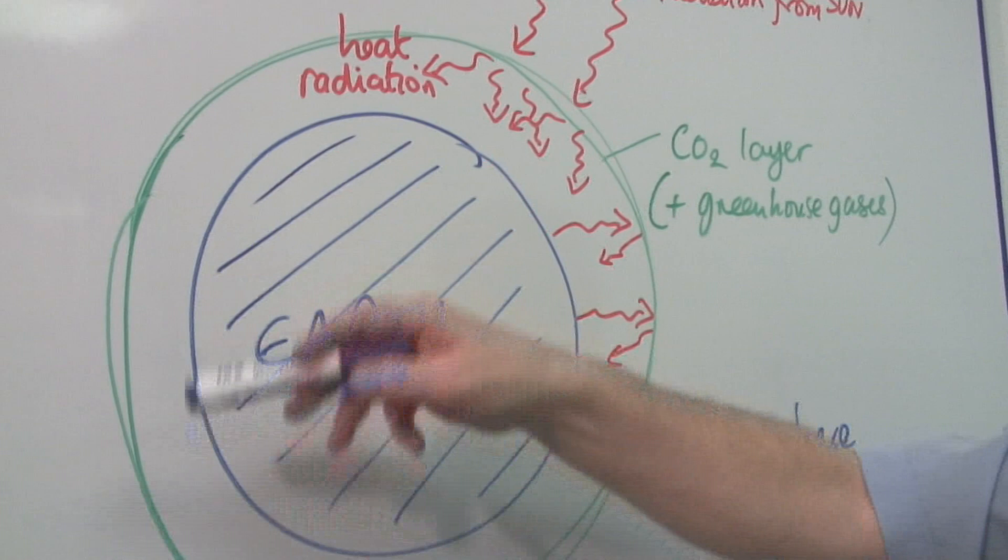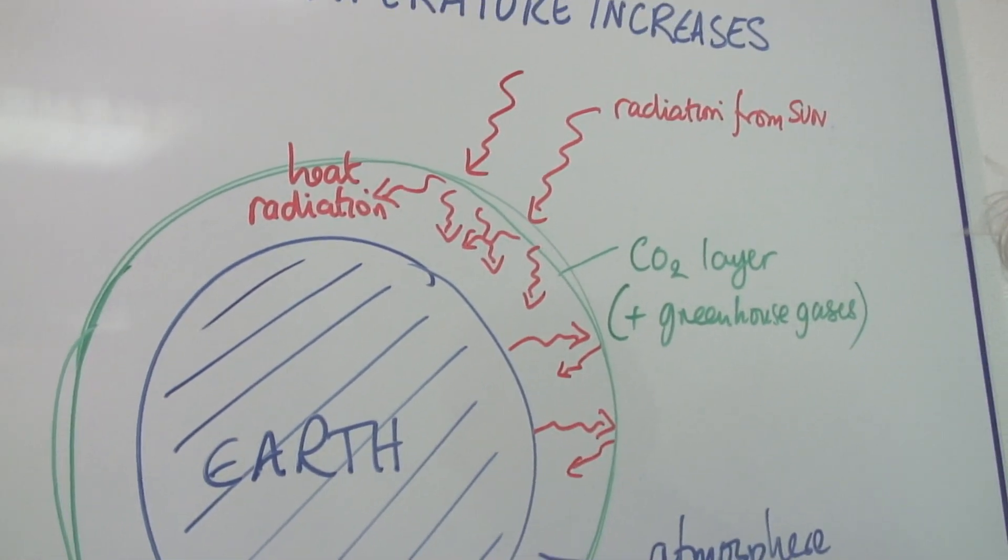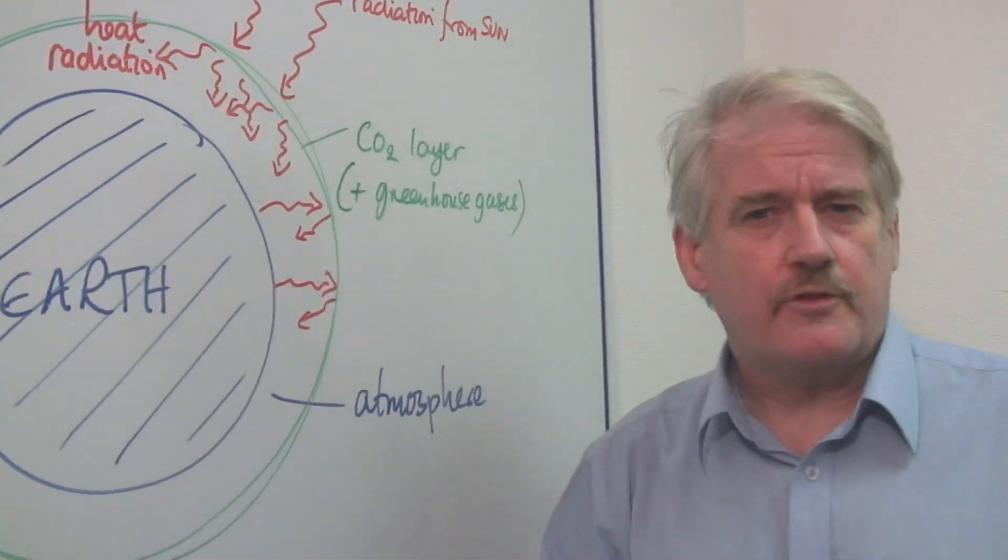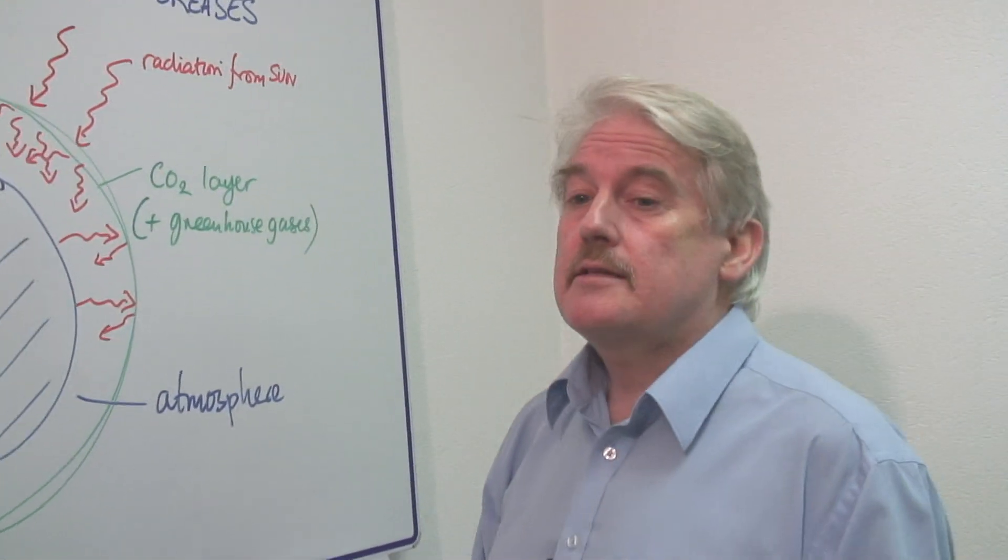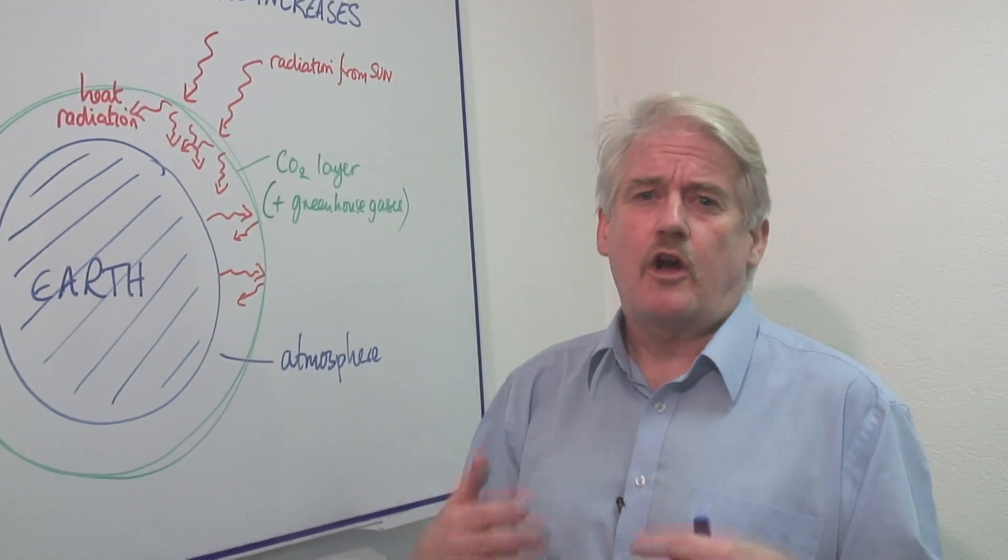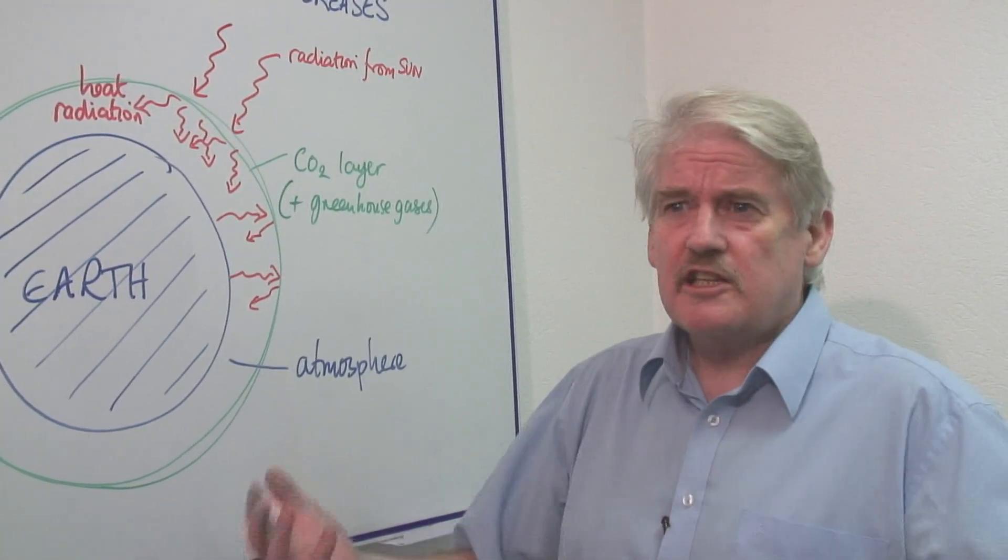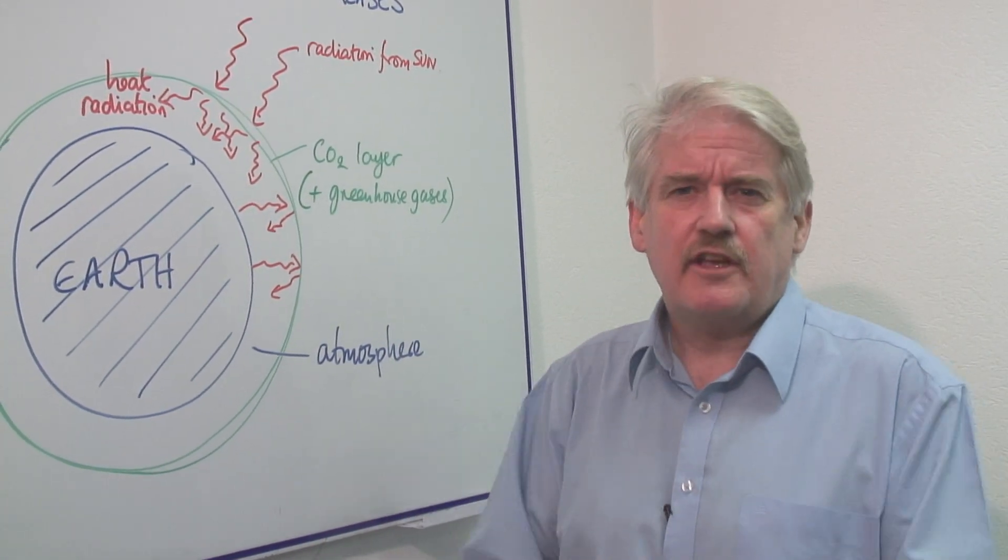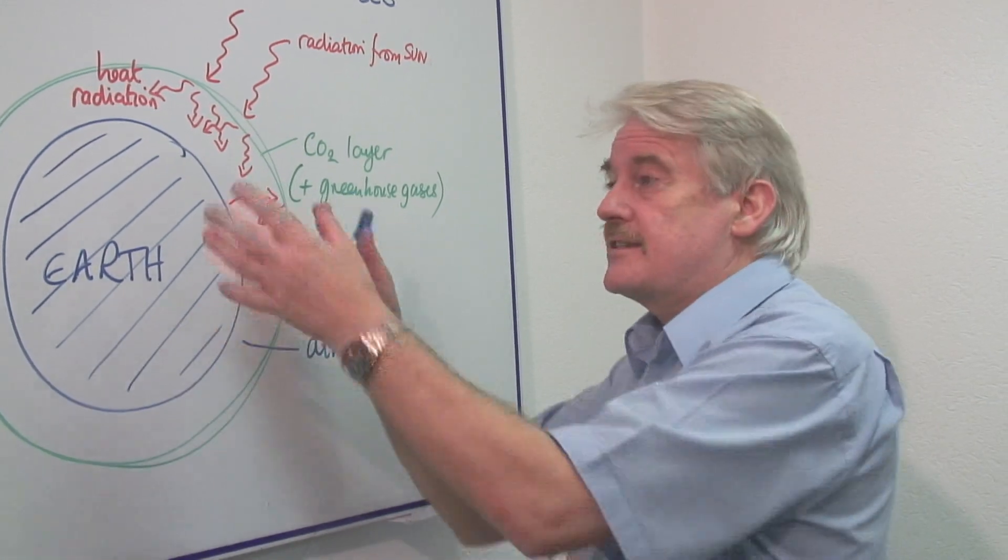One of the gases within the atmosphere is carbon dioxide. The levels of carbon dioxide are regulated by forests, seas, and so on. Carbon dioxide is locked up in organic material on the surface of the Earth, in trees or in the seas.